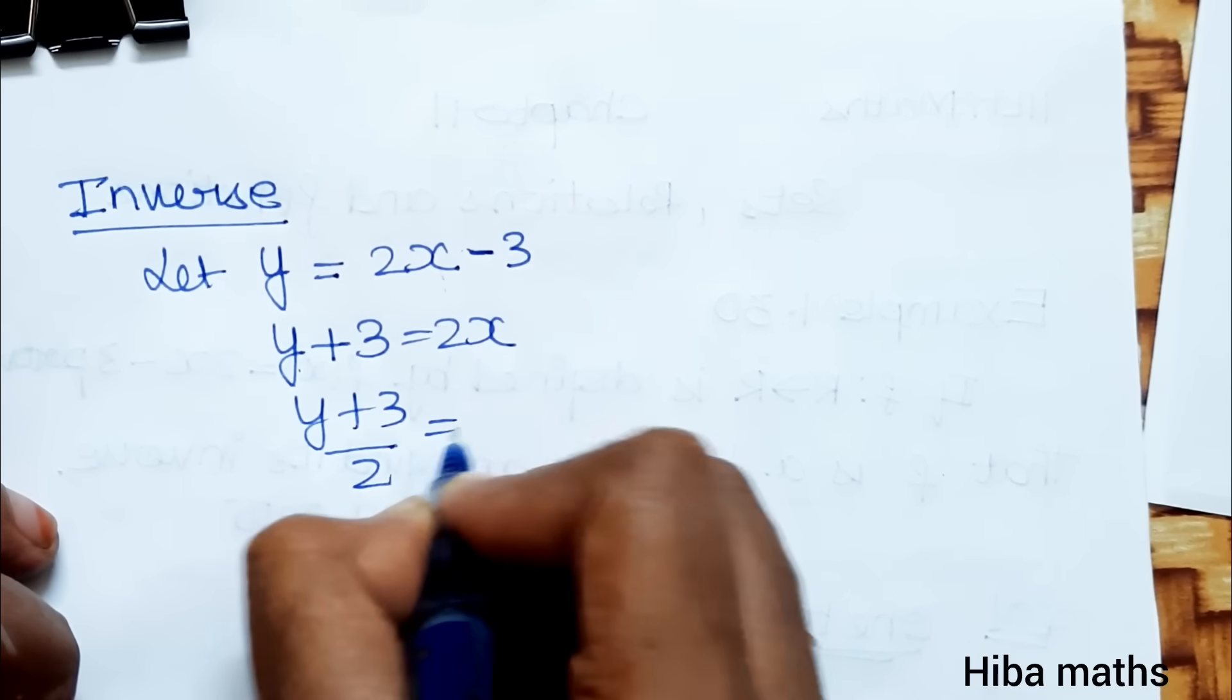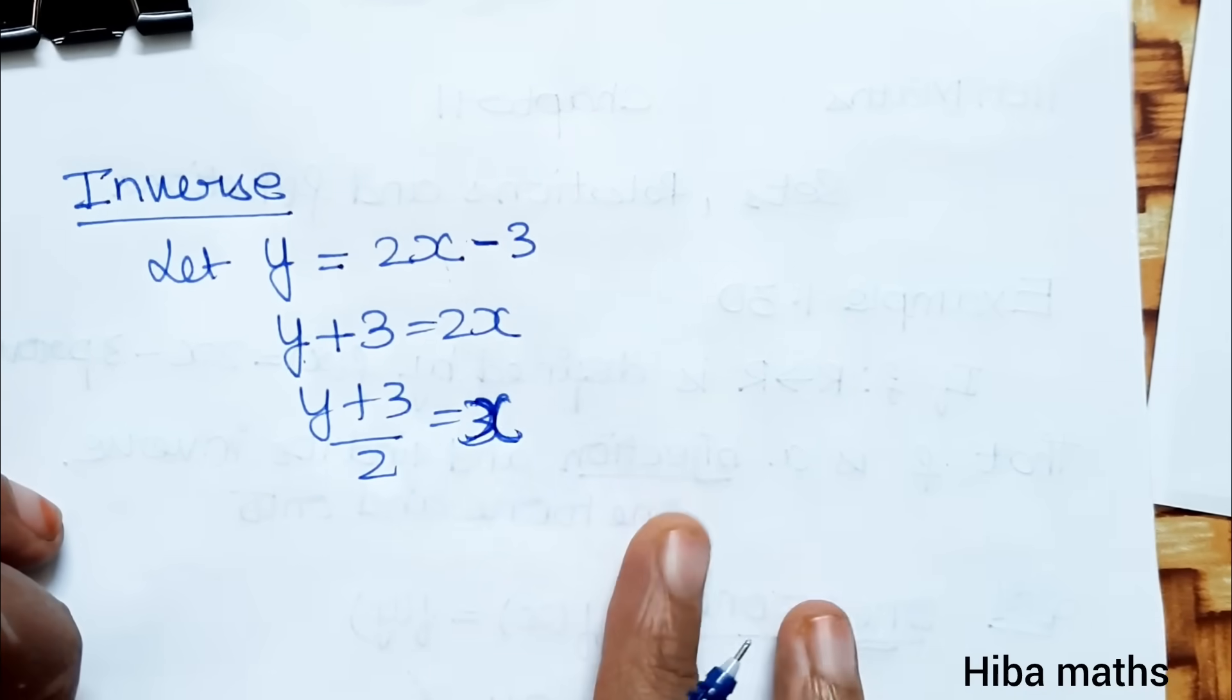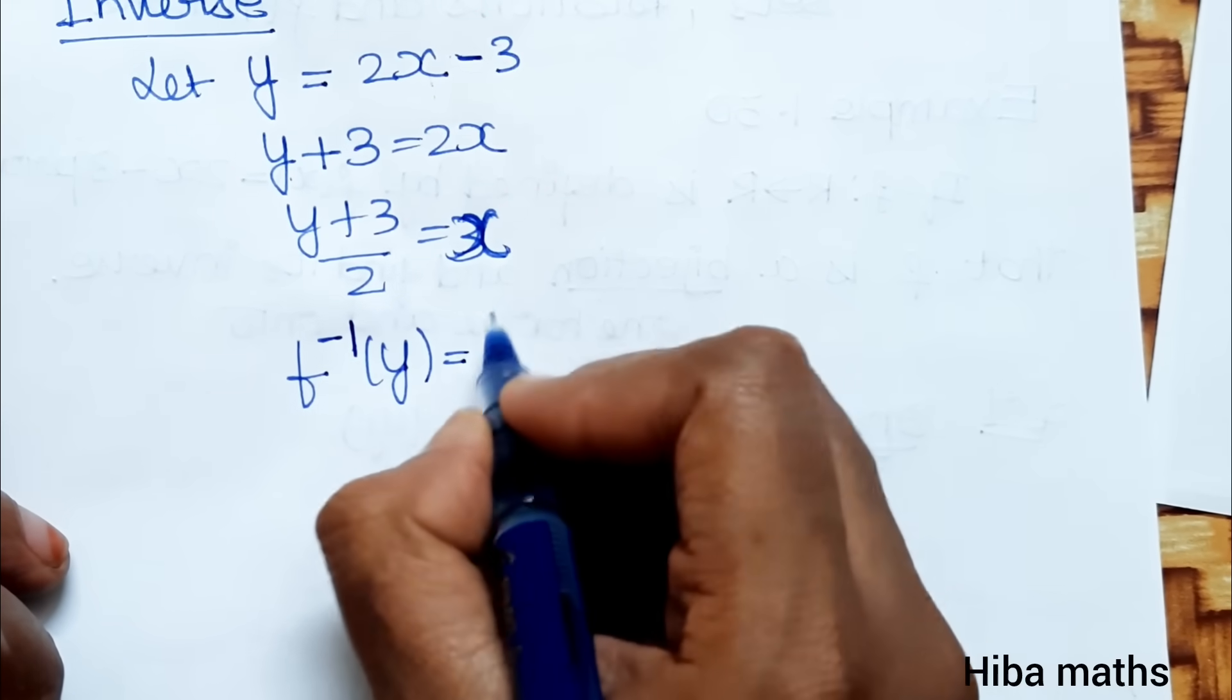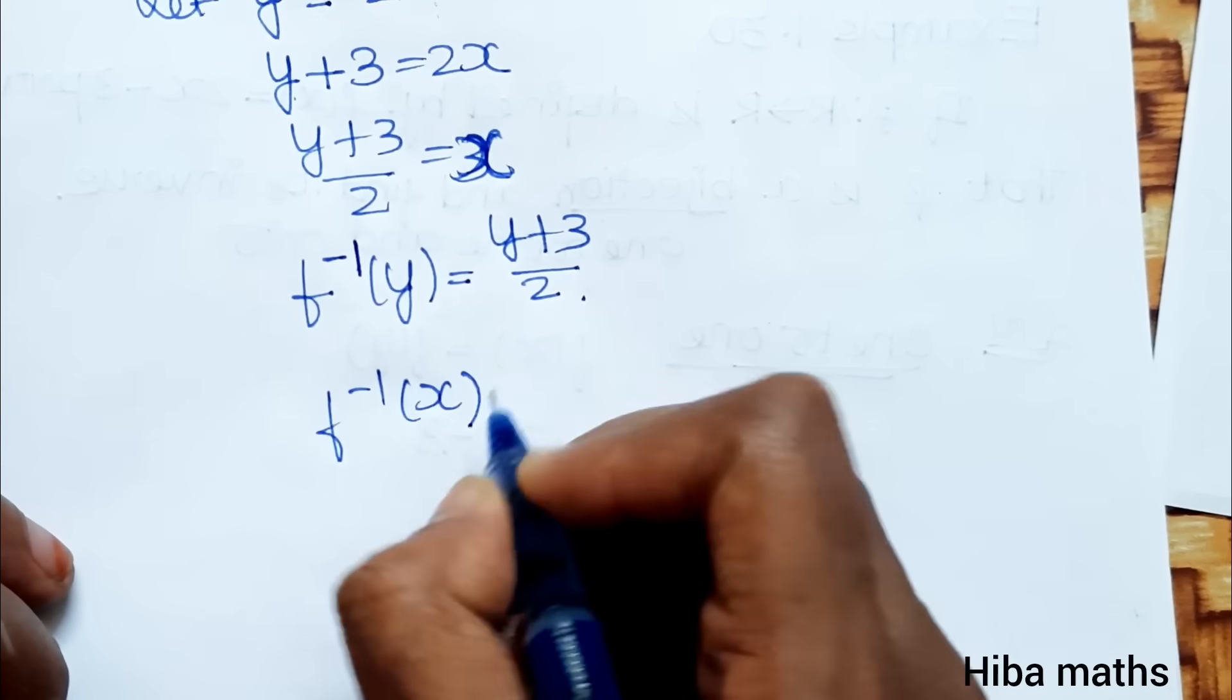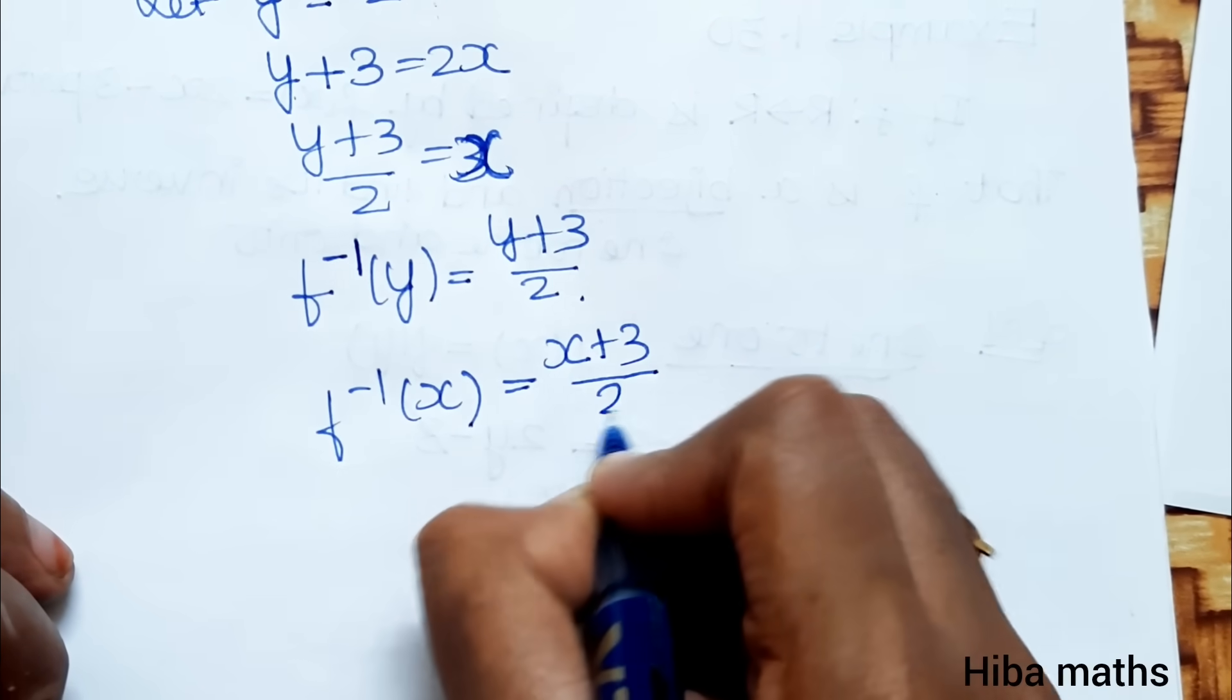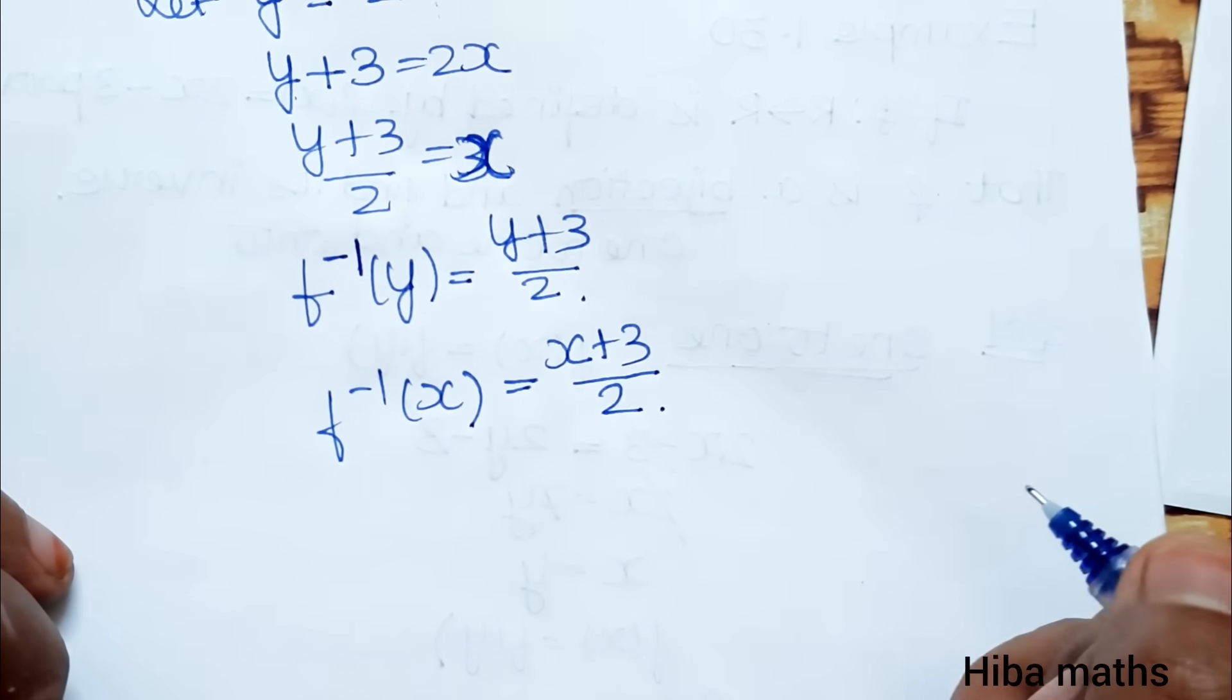x = (y+3)/2. Therefore, f inverse of y equals (y+3)/2. That is the inverse.